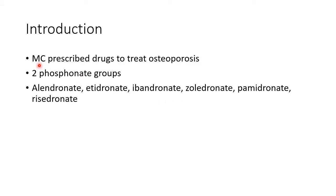Bisphosphonates are the most commonly prescribed drugs to treat osteoporosis. They are called bisphosphonates because they have two phosphonate groups in their structure. The various bisphosphonates include alendronate and etidronate.